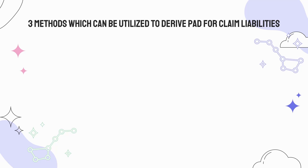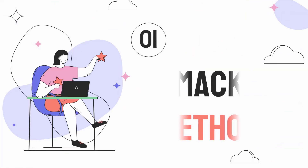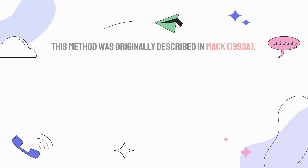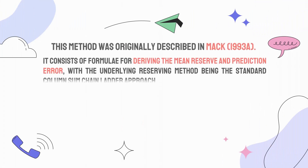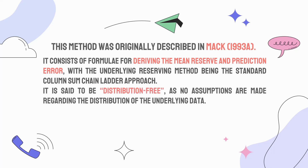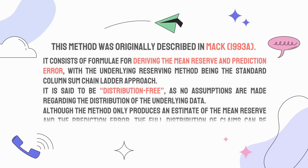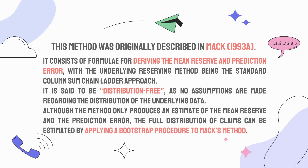Next we will discuss the methods used to derive PAD for claim liability. There are three methods: the MAC method, bootstrapping, and industry benchmark. The first method, the MAC method, was originally described in MAC (1993a). It consists of formulas for deriving the mean reserve and prediction error, with the underlying reserving method being the standard column sum chain ladder approach. It is said to be distribution-free, as no assumptions are made regarding the distribution of the underlying data. The full distribution of claims can be estimated by applying a bootstrap procedure to the MAC method.